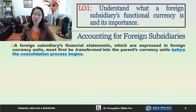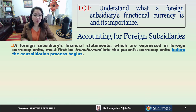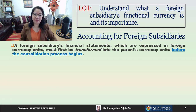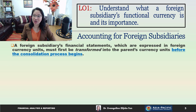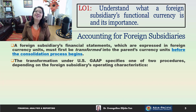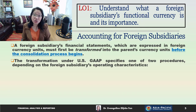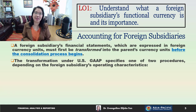We will begin our discussion with Learning Objective 1, where we will understand what a foreign subsidiary's functional currency is and its importance. A foreign subsidiary's financial statements, which are expressed in foreign currency units, must first be transformed into the parent's currency units before the consolidation process begins. The transformation under U.S. GAAP specifies one of two procedures, and the procedure chosen depends on the foreign subsidiary's operating characteristics.